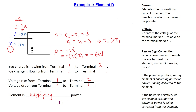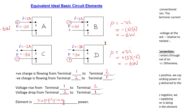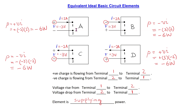Please pause the video now if you wish to study this analysis in more detail. In summary, comparing the results for the four ideal basic circuit elements A, B, C, D shown here, we can see that they are all equivalent. Equivalent means that their electrical behavior in terms of the flow of positive and negative charge, the voltage rise and drop relationships, and the power is exactly the same for all four of them. I hope this video is helpful to you in terms of analyzing ideal basic circuit elements. Thank you for watching.